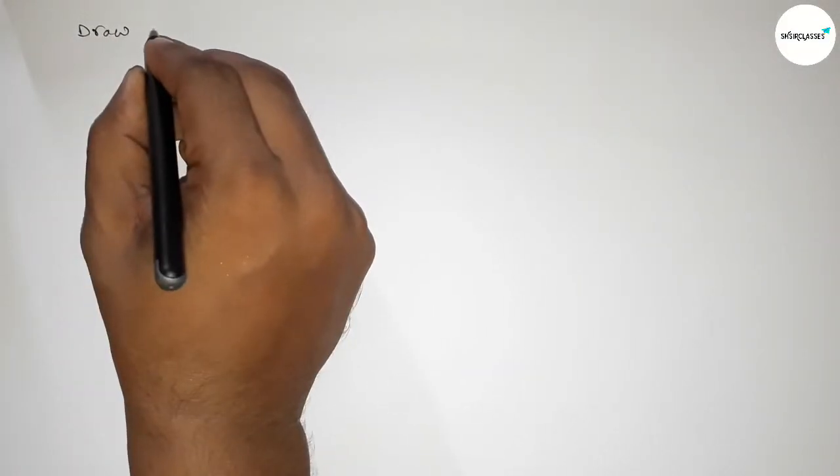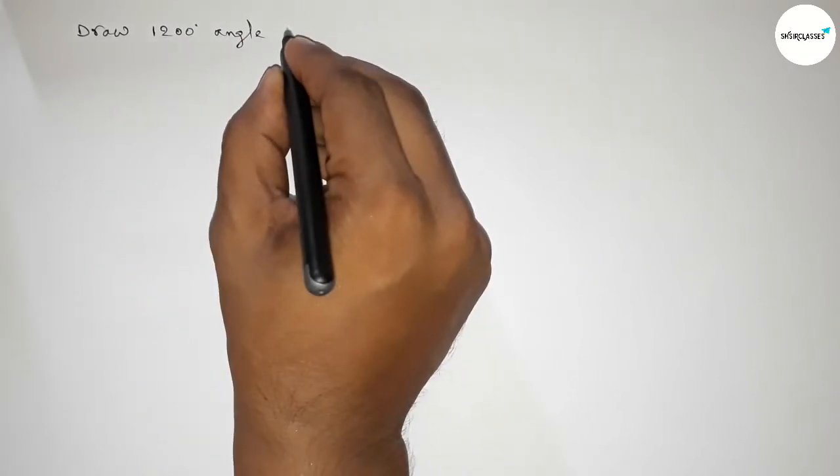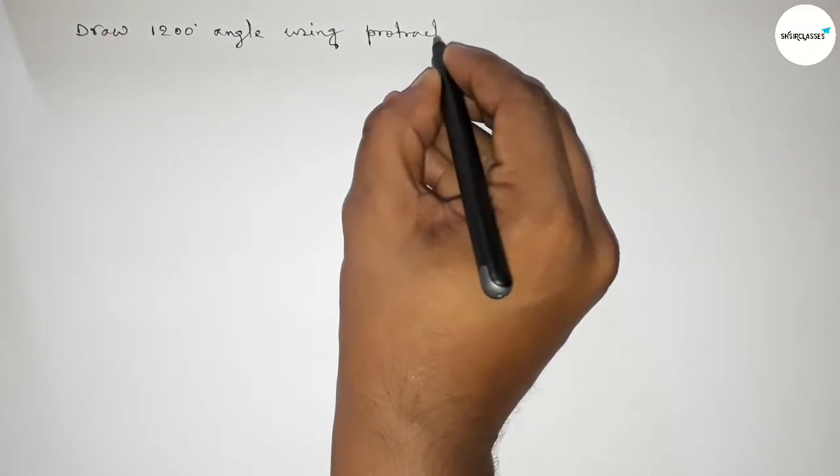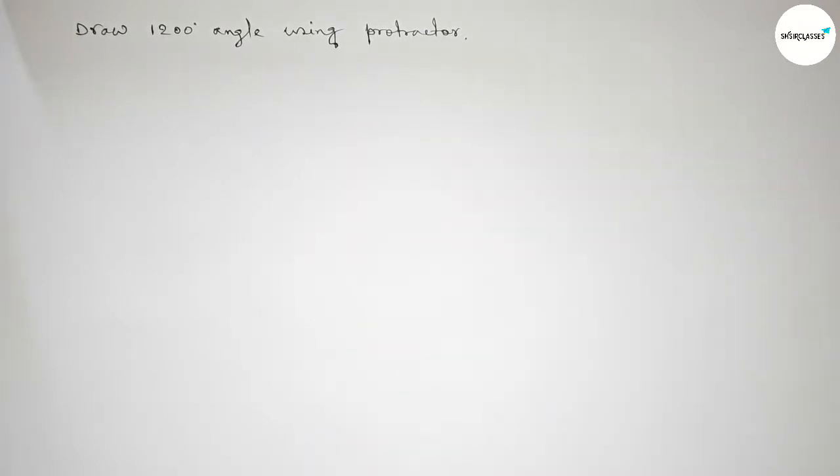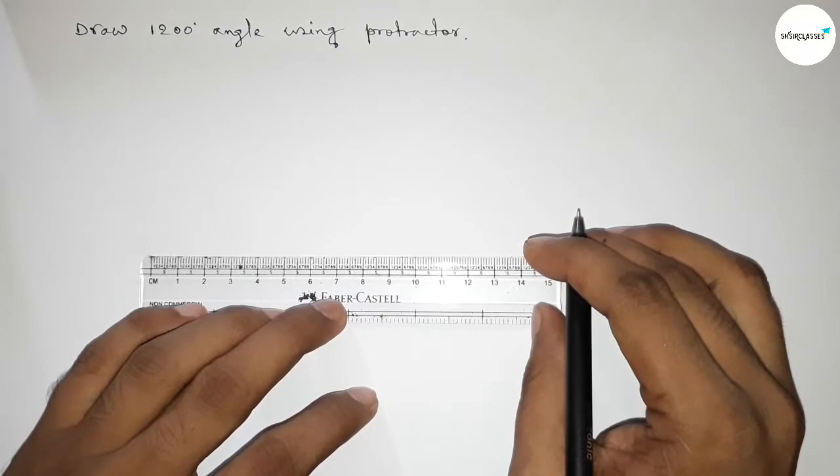Hi everyone, welcome to SI Share Classes. Today in this video, we have to draw a 1200 degree angle using a protractor in an easy way. So let's start the video. First of all, we have to draw a straight line